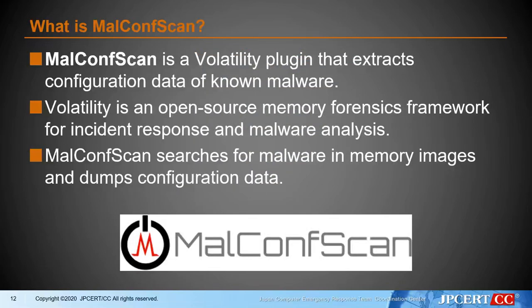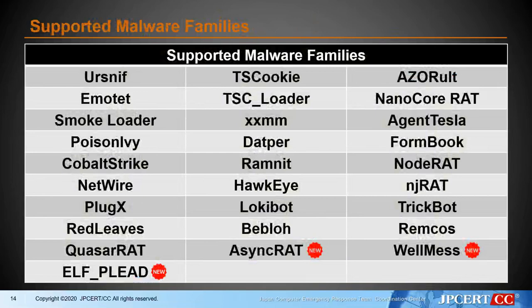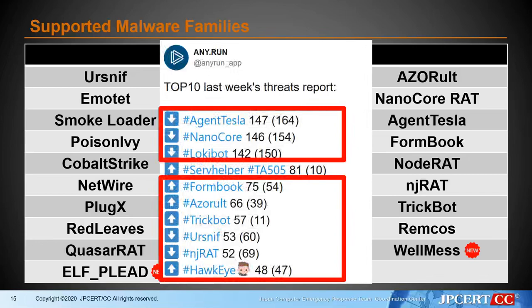From this slide, I will introduce a tool we created named MalconScan. MalconScan is a Volatility plugin that extracts configuration data of known malware. Volatility is an open-source memory forensics framework for incident response and malware analysis. This tool searches for malware in a memory image and dumps configuration data. This is an example of MalconScan dumping RedLeaves malware configuration — you can see C2 server, encryption key, mutex, and user agent. Now MalconScan supports over 28 malware families and most of the malware families reported in JPCERT's top 10 threat report.